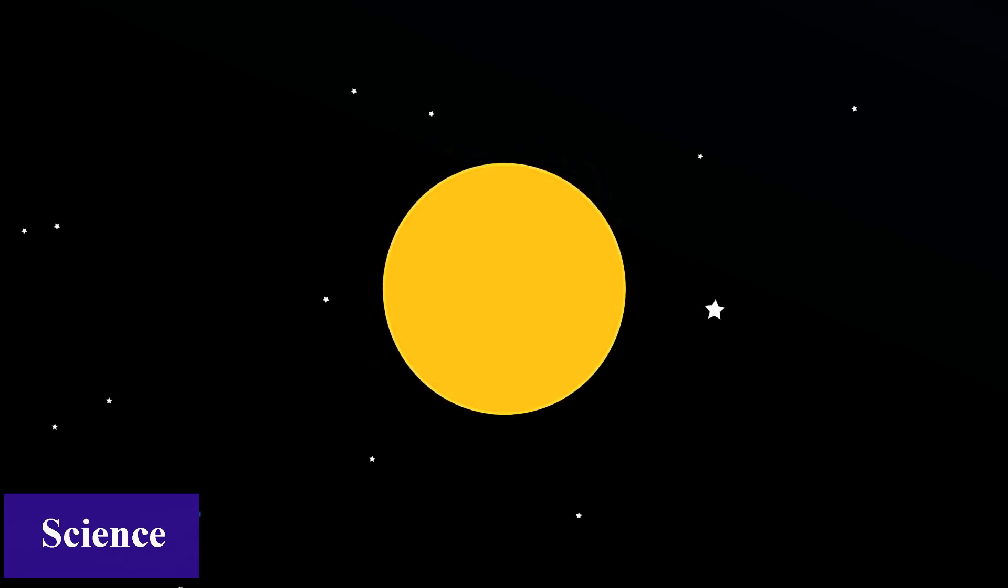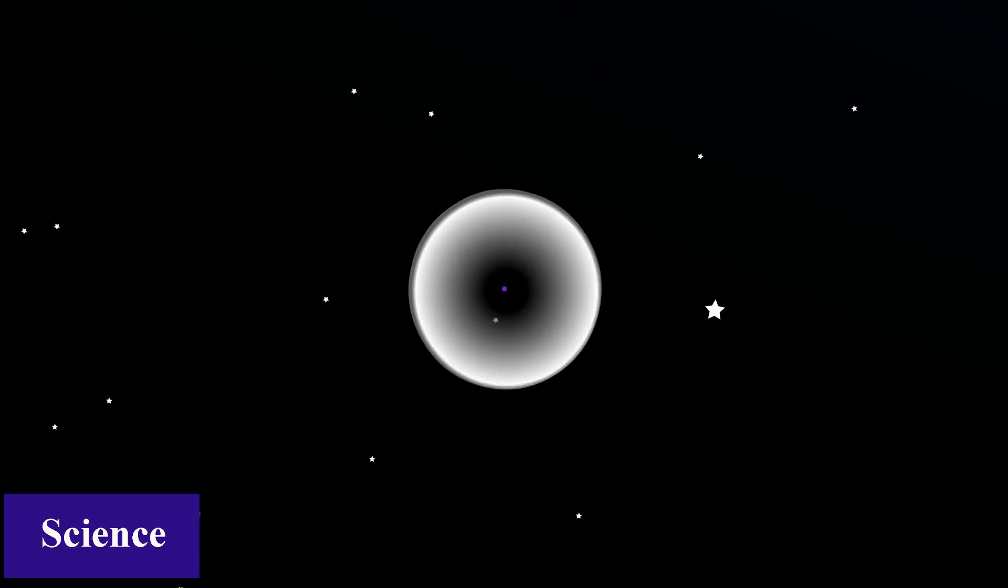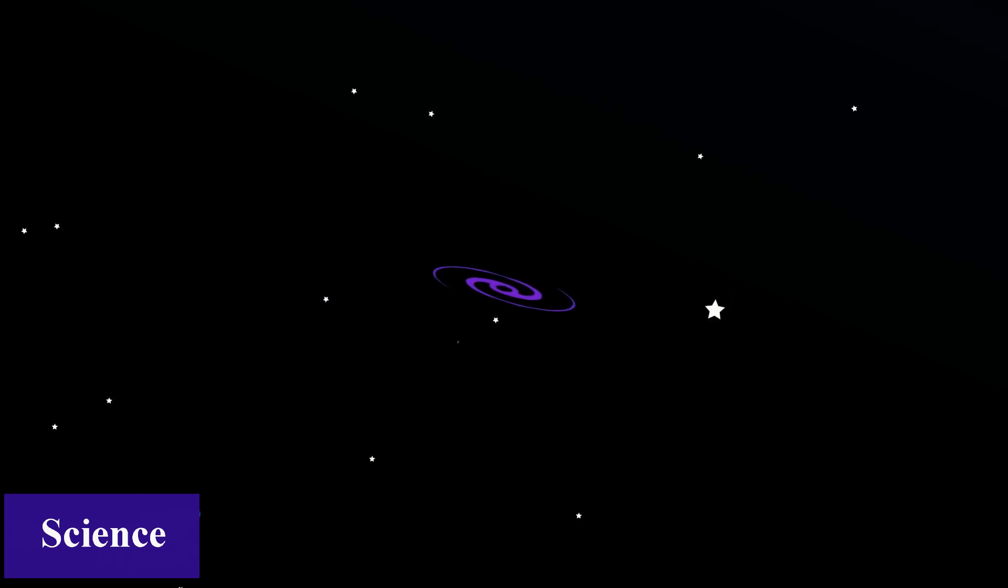Black holes form at the end of some stars' lives. The energy that held the star together disappears and it collapses in on itself, producing a magnificent explosion.